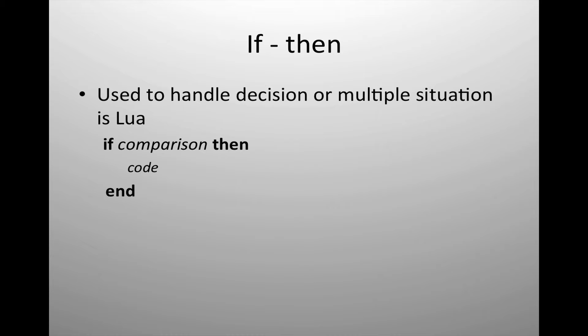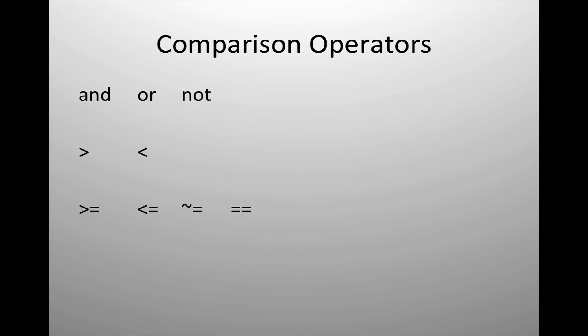The basic structure is that you'll have your command if, the comparison that needs to occur, the keyword then, any code that needs to happen, and then you complete the if-then structure with the keyword end. The comparison operators used for an if-then structure are and, or, and not.